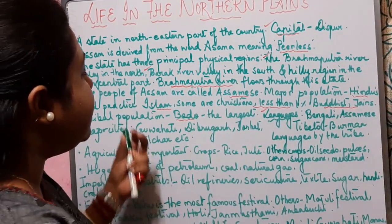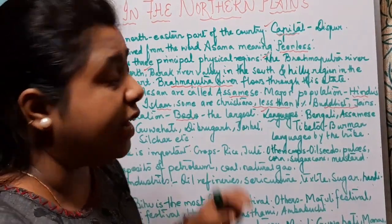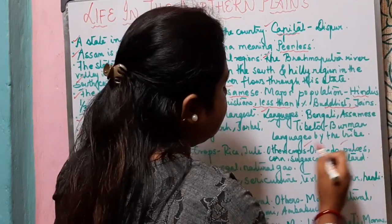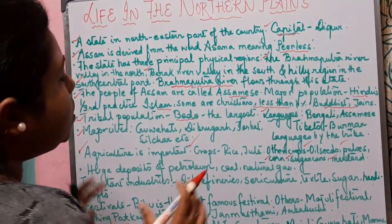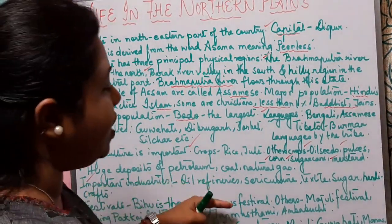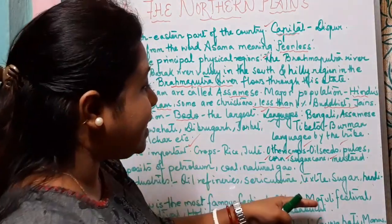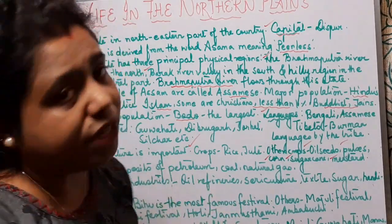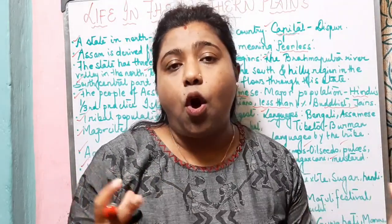Agriculture is an important occupation in Assam. The main crops grown are rice, tea and jute. Other crops include oilseeds, pulses, corn, sugarcane and mustard. There are huge deposits of petroleum, coal and natural gas. Important industries are oil refineries, sericulture for silk production, textile industry, sugar industry and handicrafts. Bihu is the most famous festival celebrated here. Assam can truly be called the land of colorful festivals and fairs.